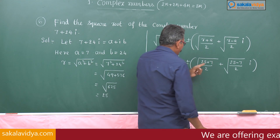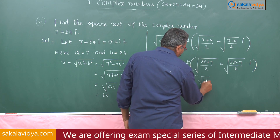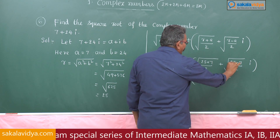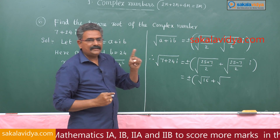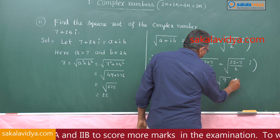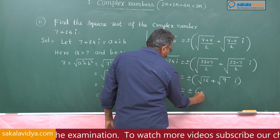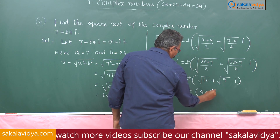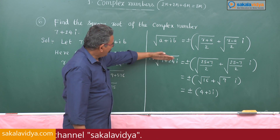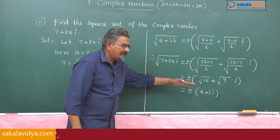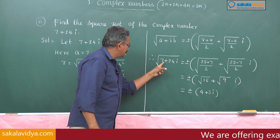25 plus 7 is 32, and 32 divided by 2 is 16. 25 minus 7 is 18, and 18 divided by 2 is 9. So we get root of 16 plus root of 9 times i, which equals 4 plus 3i. Therefore, the square root of 7 plus 24i is plus or minus (4 plus 3i). If you square it, you will get 7 plus 24i.